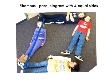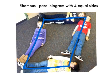A rhombus is a parallelogram with four equal sides. Thank you.